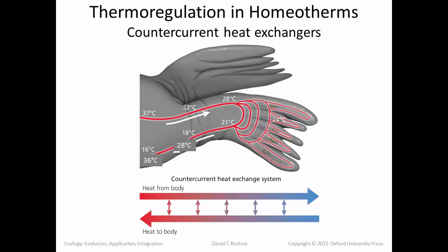The counter current heat exchanger works through the juxtaposition of arteries leading from the body to the limb with veins leading from the limb back to the body. As blood leaves the body going toward the limb, it is placed next to blood leaving the limb going back to the body, and there is a transfer of heat across. Because the blood moves in counter directions in these arteries and veins, it's called counter current. This gently warms the blood from the extremities as it returns to the body, conserving the heat the animal was producing and allowing it to maintain homeostasis with regard to temperature.